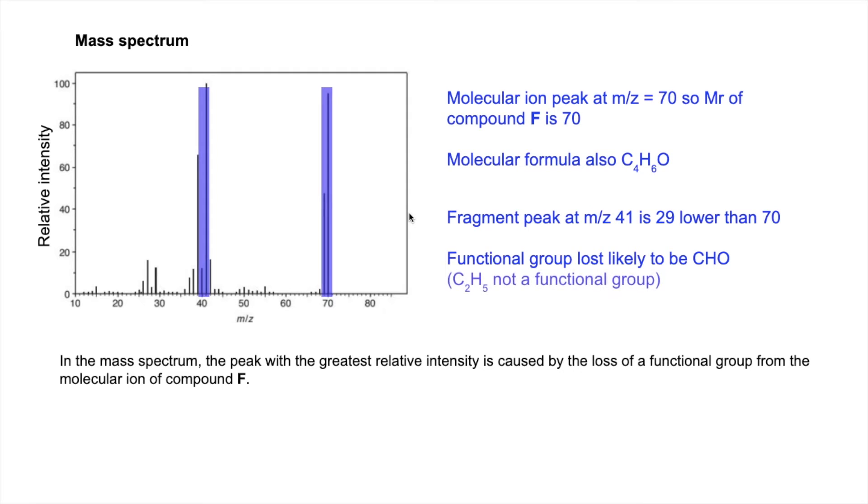Now you might also be thinking that C2H5, so an ethyl, that's a common fragment that can break off a molecule. That does have a mass of 29. So two carbons, 24 plus 5 for those five hydrogens. So it does have a mass of 29, but it's not a functional group.